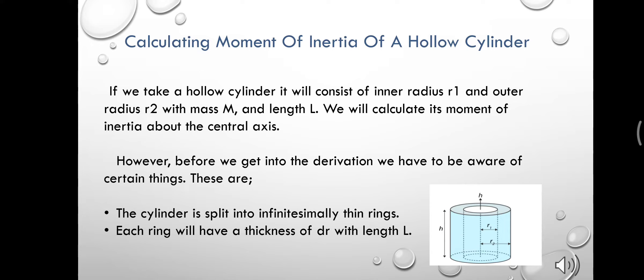For calculating the moment of inertia of a hollow cylinder, we have to take a hollow cylinder which consists of inner radius R1 and outer radius R2 with mass M and length L. We will calculate its moment of inertia about the central axis.